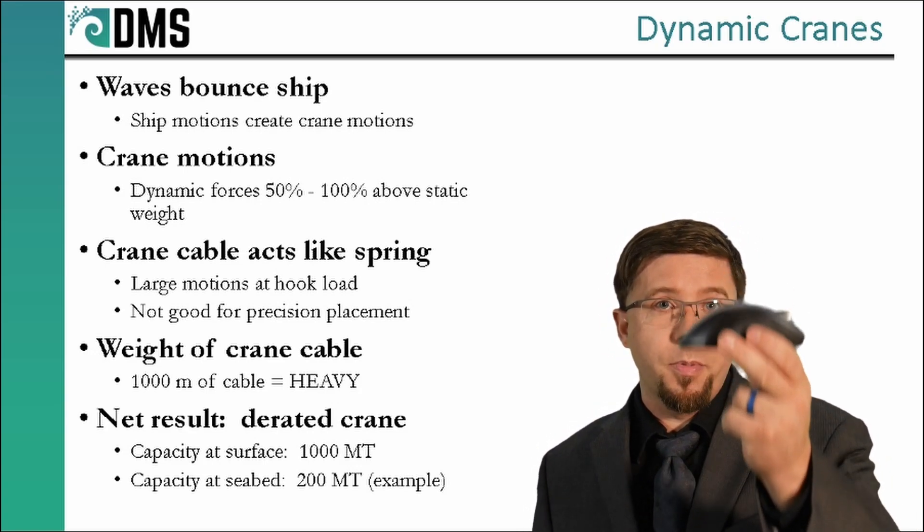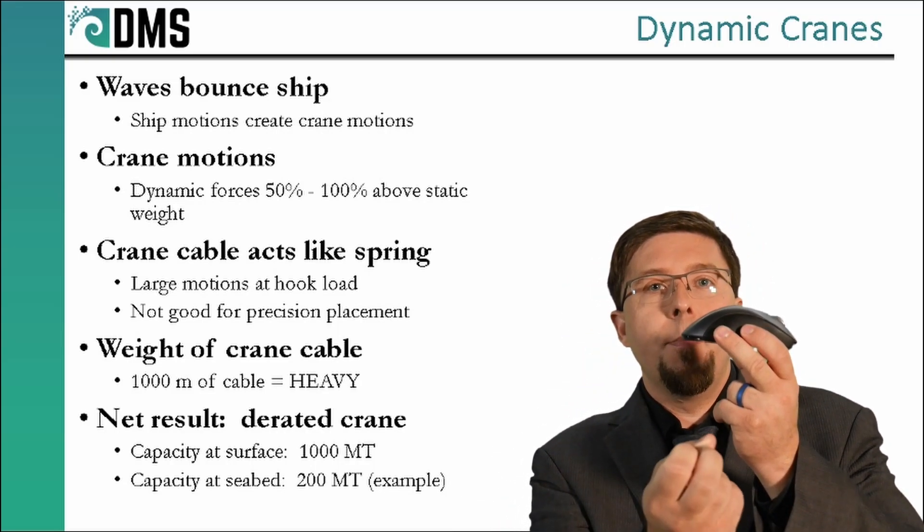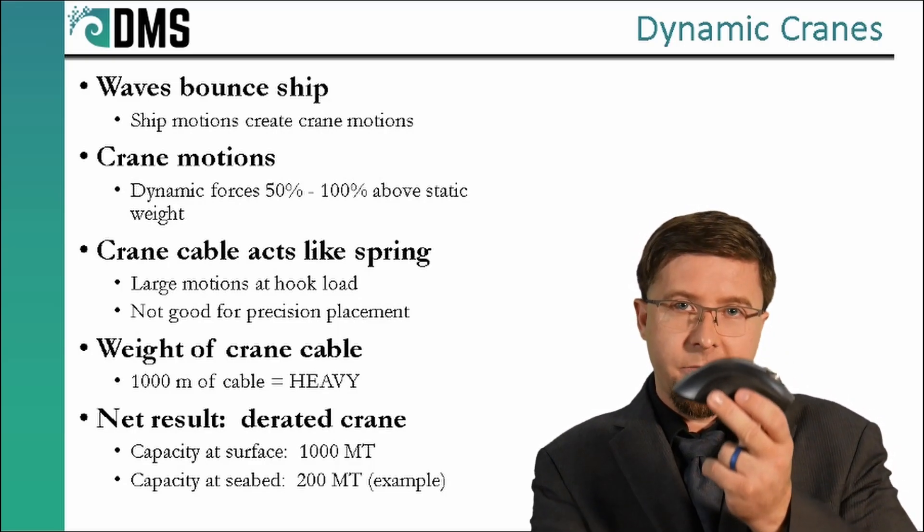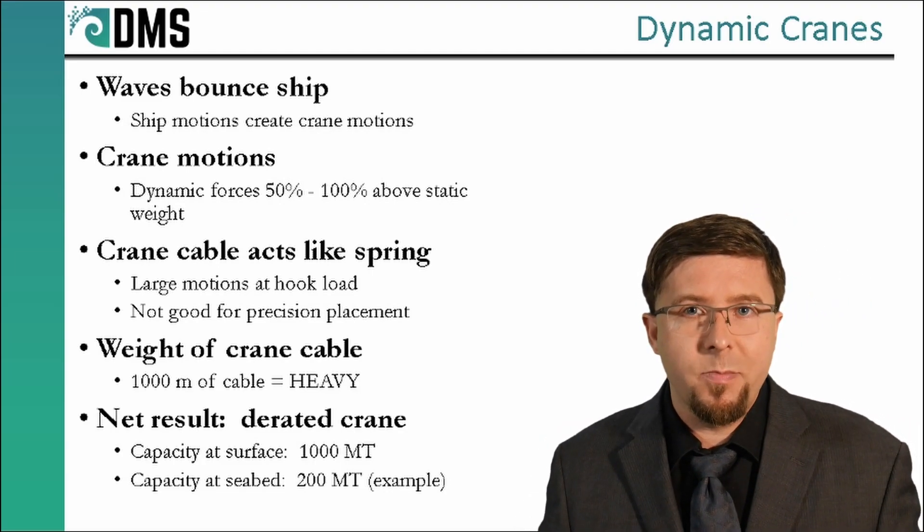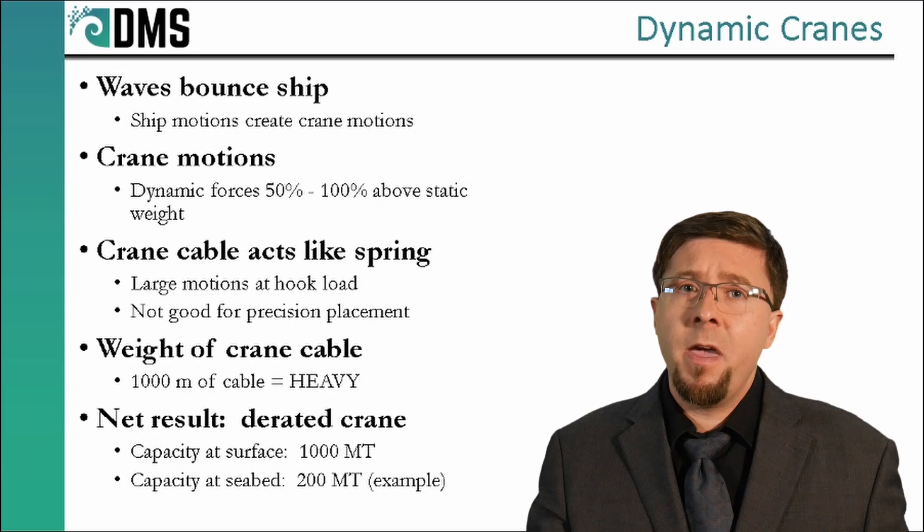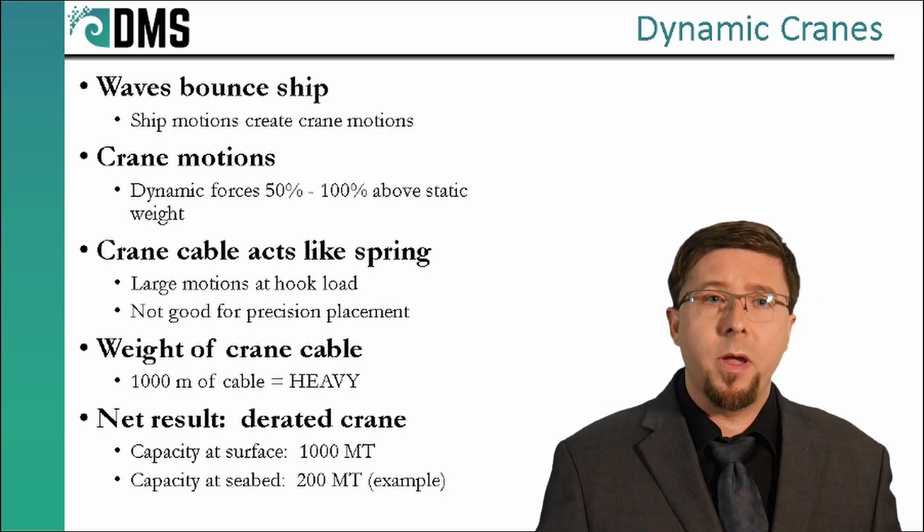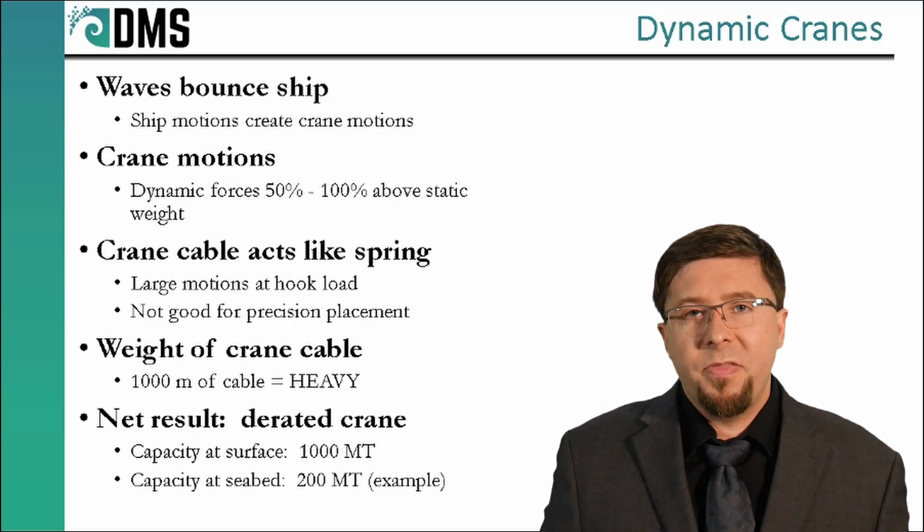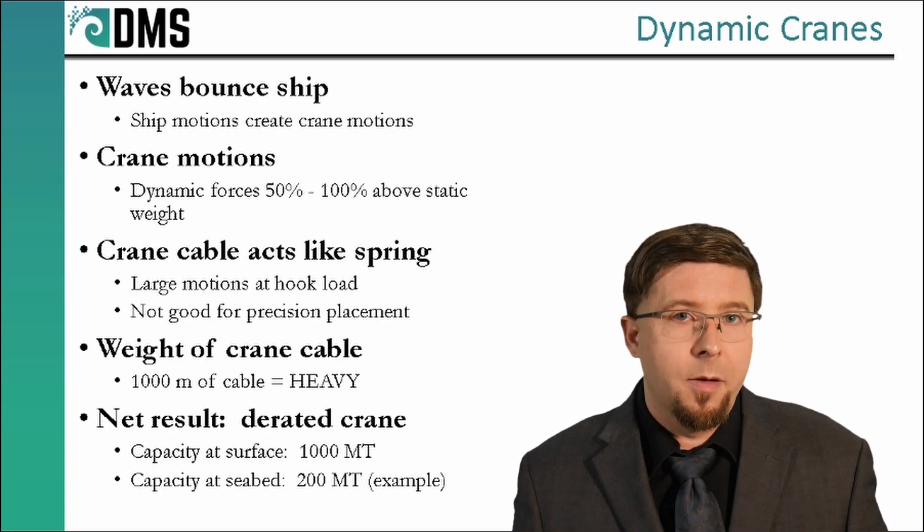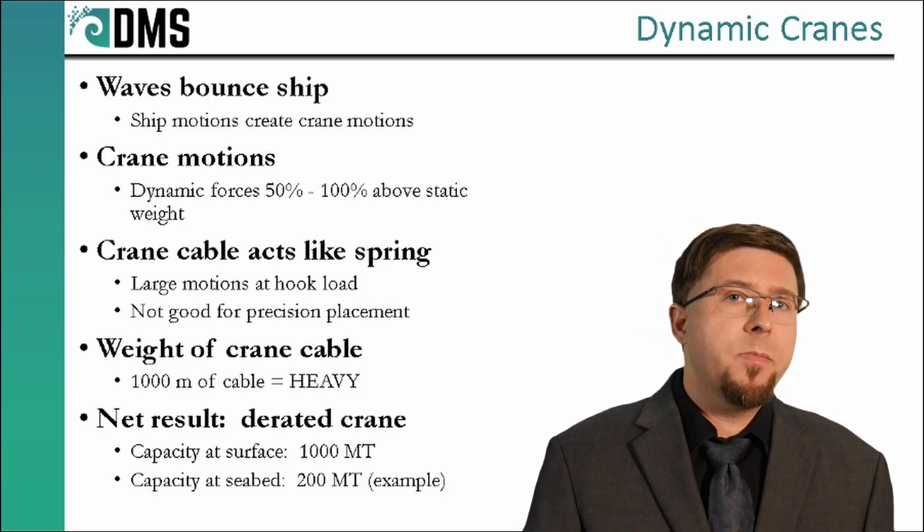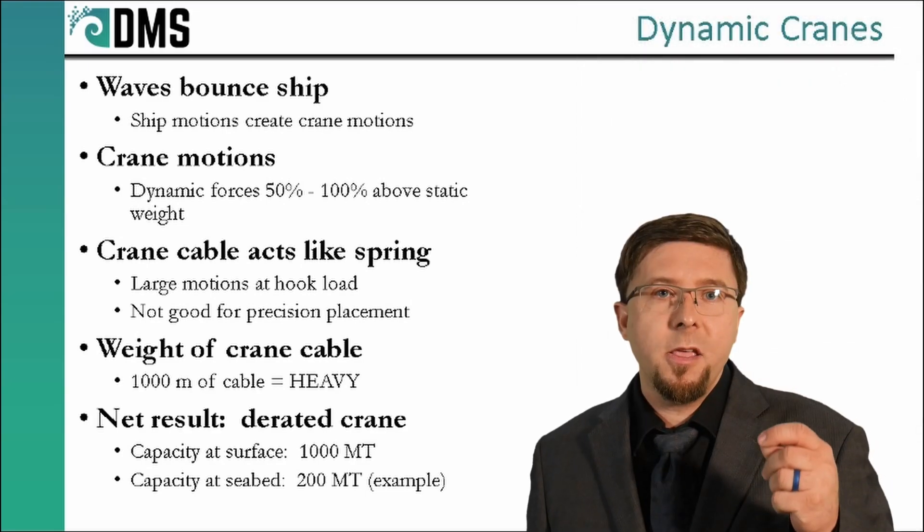First, the waves bounce the ship. Which is also bouncing the crane attached to the ship. Which is then, in turn, pulling and bouncing the heavy load hanging off of our crane line. But this is no normal crane line. Lowering something down to the seabed means that we have a very long line. Our load is suspended a thousand meters down, hanging off of that crane below the water's surface. At that length, the minor stretch, the little elasticity of your crane line, starts to add up. And suddenly, this thing behaves like a giant spring. Imagine the world's biggest slinky.